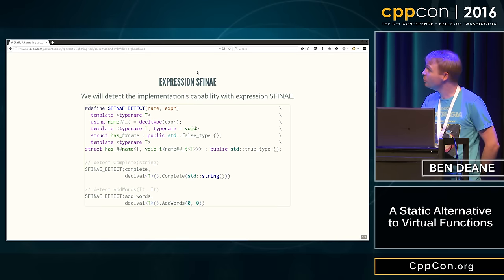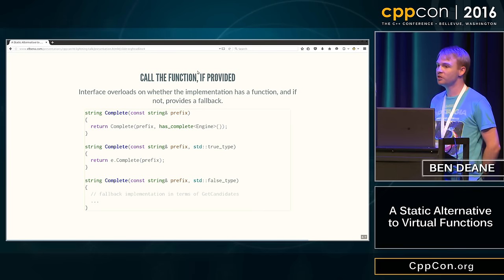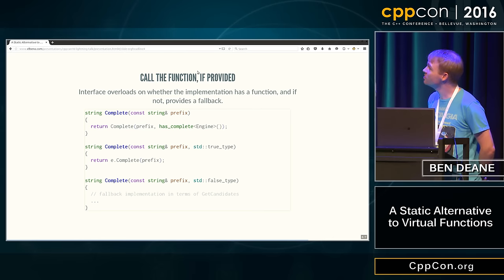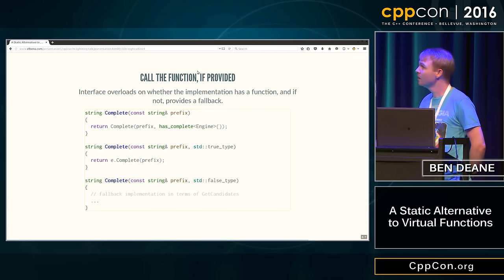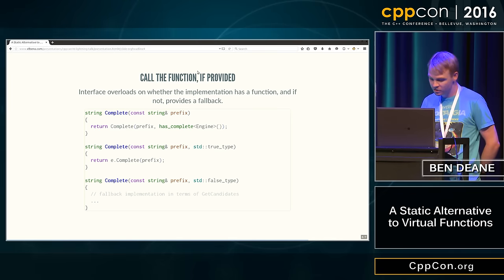Well, now that we have this, all that we need to do in our function bodies in our interface is overload the true_type and false_type, and pass it the thing that was derived from either true_type or false_type by the macro. So our engine is the argument that was passed in. We say, does it have complete? If it does, we call the true_type, and that just calls through to the engine's version. Otherwise, we have our fallback code. And this all inlines as you'd expect.